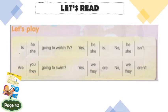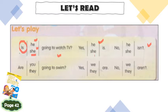We use 'is' for he and she. So: 'Is he going to watch TV?' The answer should be 'Yes, he is' or 'No, he isn't.' What about she? 'Is she going to watch TV?' If the answer is correct, you say 'Yes, she is.'